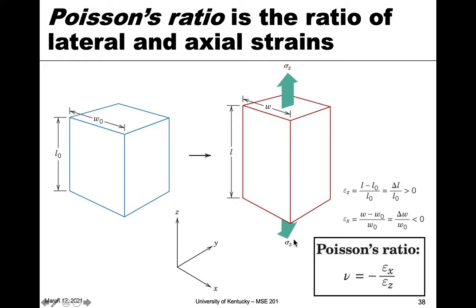And what we find is to conserve volume, if we extend or elongate the sample, the other directions, the lateral directions, contract such that we effectively have a negative incorporated into this ratio.